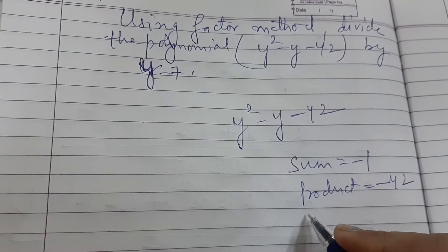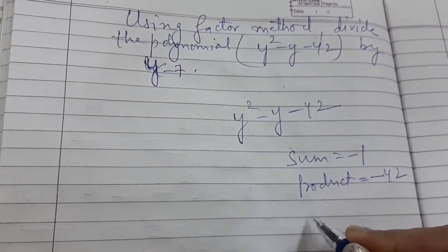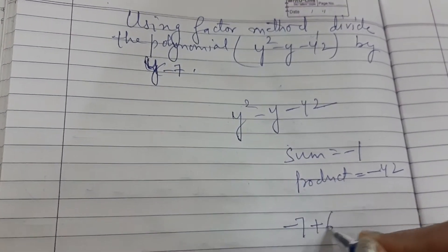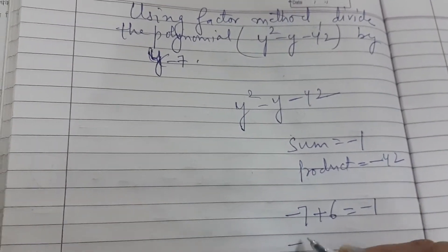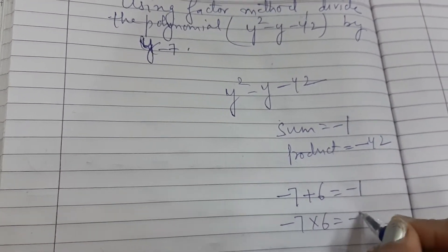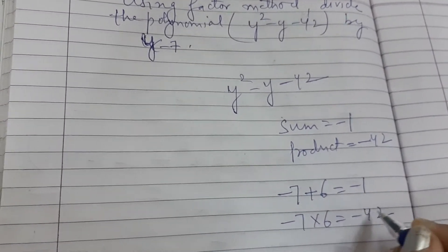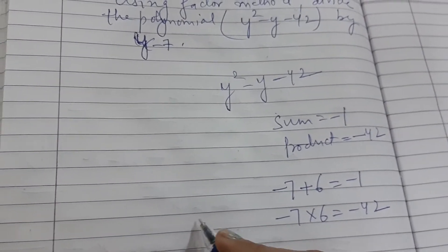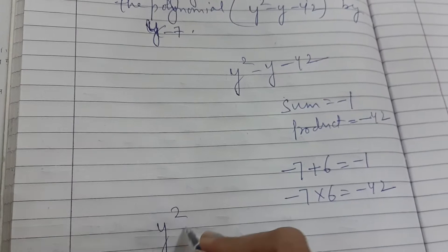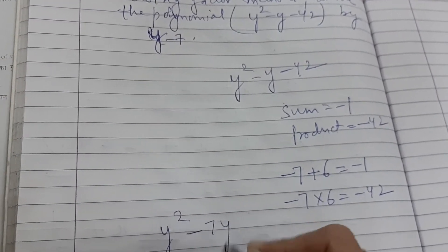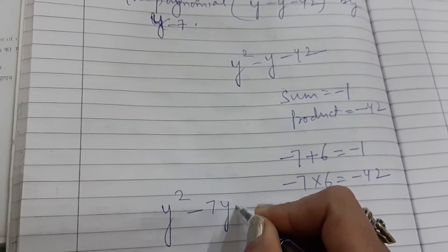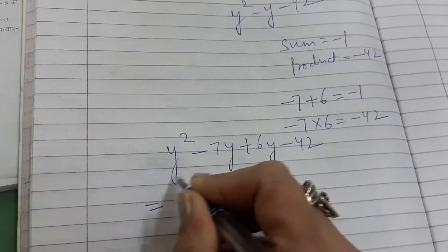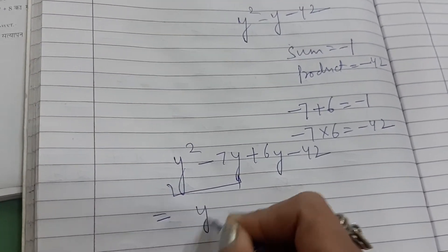Can you tell me two numbers? 6 and 7. So minus 7 plus 6 is minus 1, and minus 7 into 6 is minus 42. So we will be factorizing y squared minus y minus 42. This becomes y squared minus 7y plus 6y minus 42, which is equal to — take y common from the first two terms.